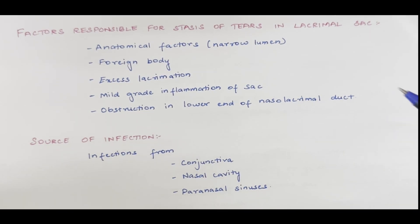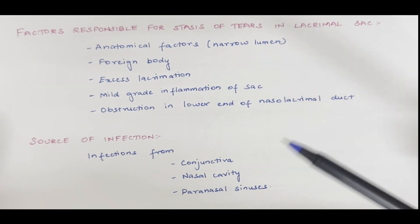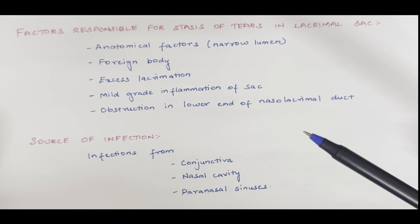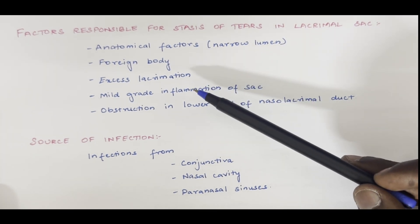Inflammation of lacrimal sac occurs due to stasis of tear in lacrimal sac. There are two main factors responsible: one is obstruction and the other is excess lacrimation.